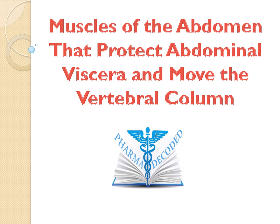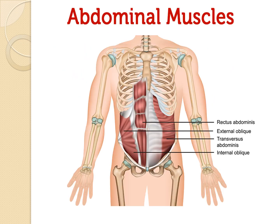Hello everyone. Now let us discuss about the muscles of abdomen that protect the abdominal viscera and move the vertebral column. This is the pictorial representation of abdominal muscles. There are four pairs of abdominal muscles: external oblique, internal oblique, transverse abdominis and rectus abdominis.